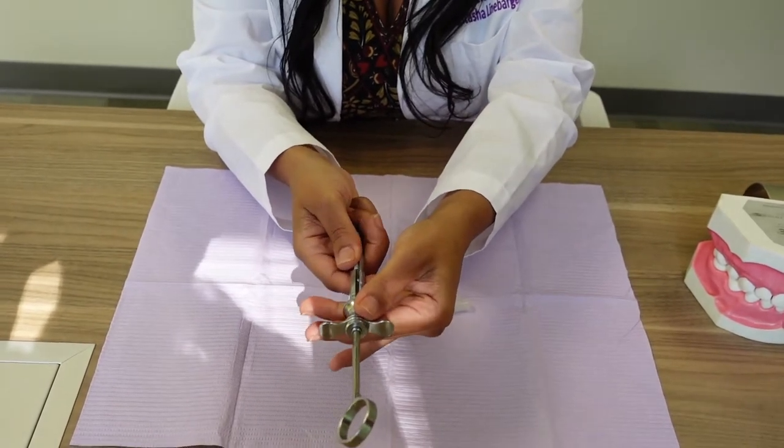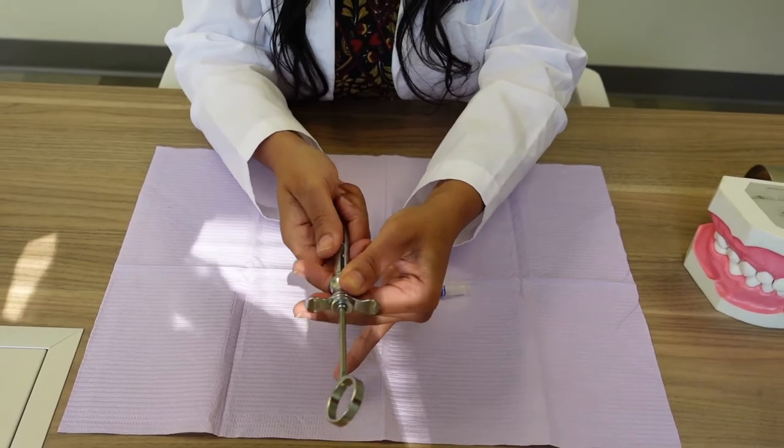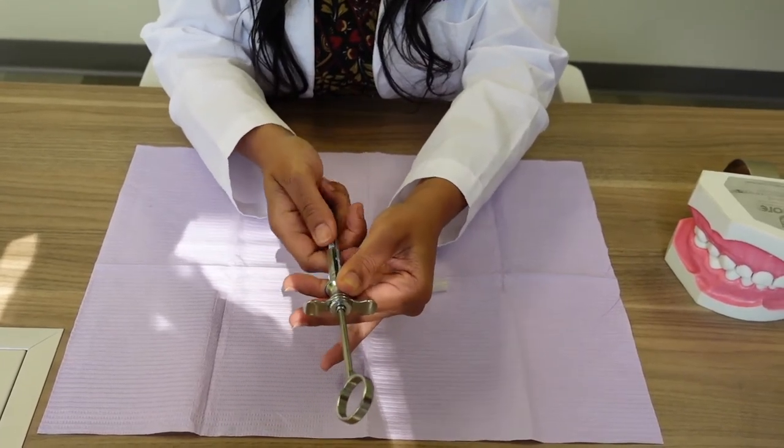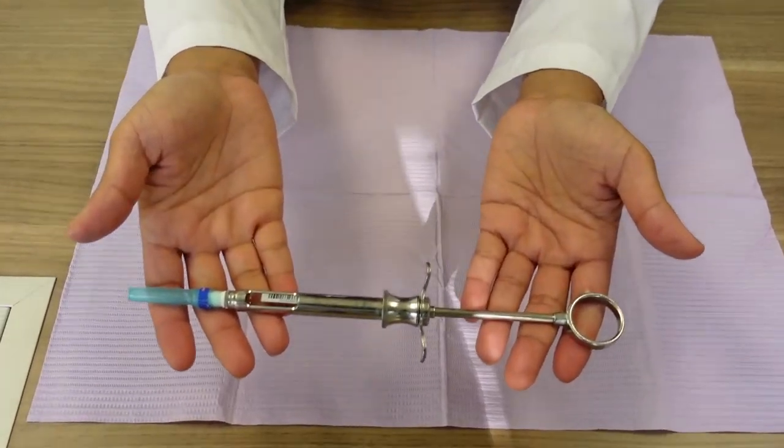When the doctor grabs for it, you're going to pull back and it takes the top off. You see that? It's like you're doing this motion. So that's how you actually set up an aspirating syringe.